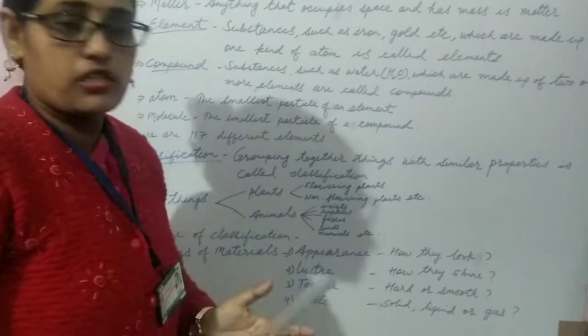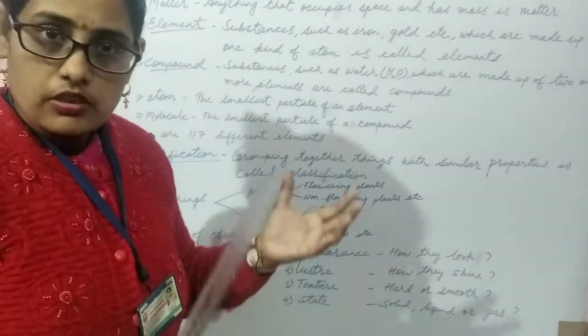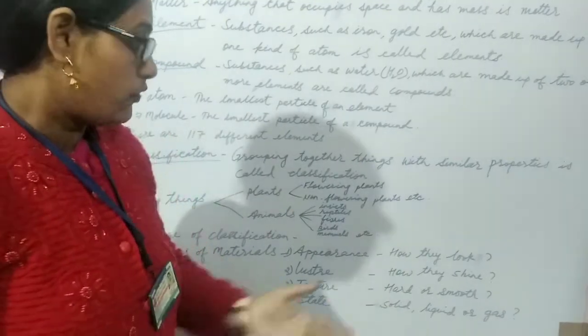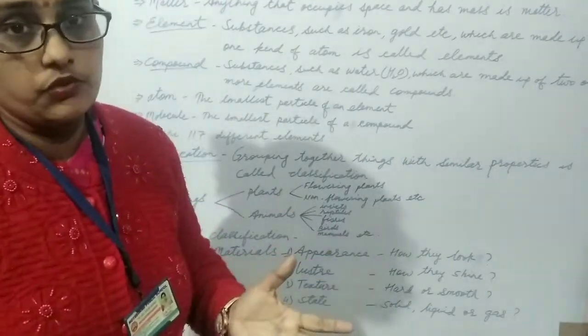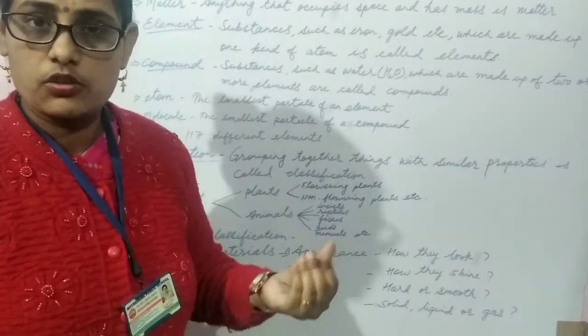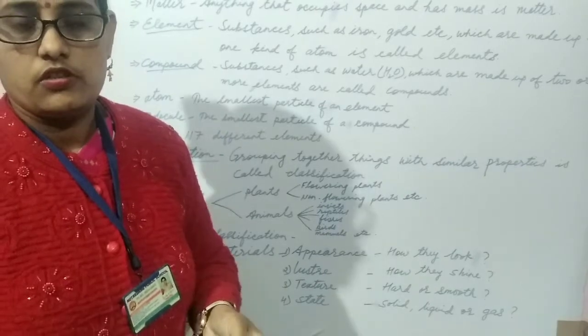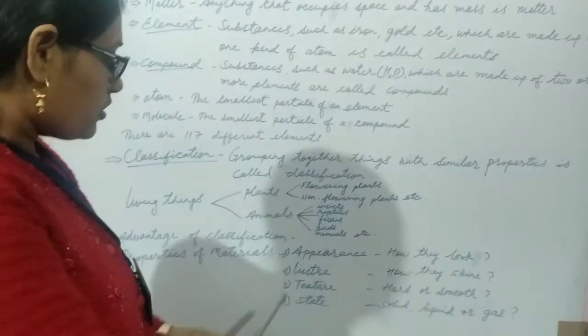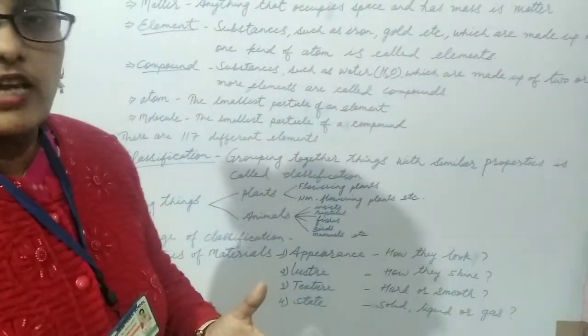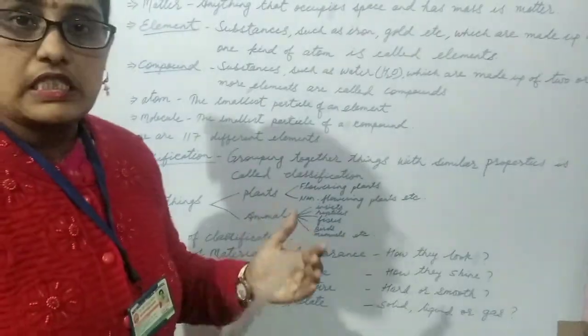The third is texture. Whether the material is hard or smooth. When we touch the objects, what do we feel. Whether it is hard like wood or stone. Or whether it is smooth like cotton ball or silk. So this is texture.